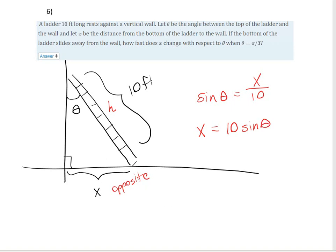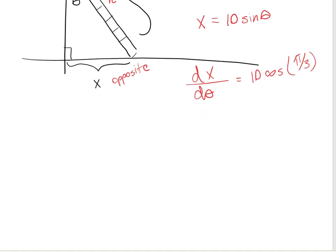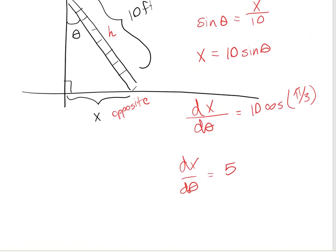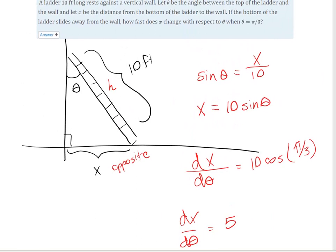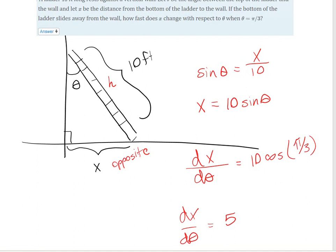Taking the derivative gives dx over d theta equals 10 cosine of theta, and plugging in pi over 3 gives 10 times cosine of pi over 3, which equals 5. But 5 what? X is in feet and theta is measured in radians, so the rate of change is 5 feet per radian — meaning the bottom of the ladder moves 5 feet away from the wall for every radian that angle increases.